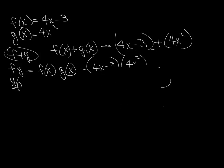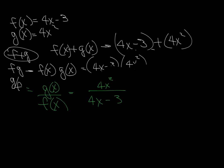The next one has me dividing, G of x divided by F of x. So G of x is 4x squared and that's going to go over 4x minus 3, and I can't do anything with that so that's my answer there. So that's example number 2.